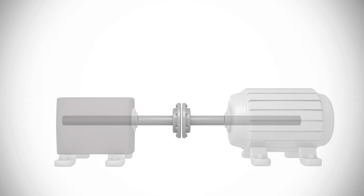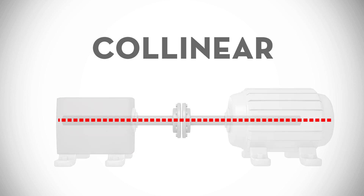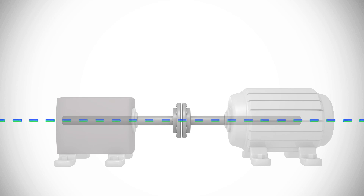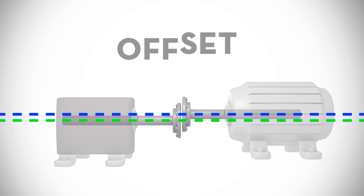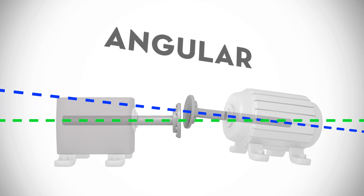If two shafts are perfectly aligned, they are said to be collinear. Collinear means that a single straight line will define the center of both shafts. Of course, this is almost never the case in the field. Shafts are usually out of alignment, with the misalignment taking two forms: offset misalignment and angular misalignment.